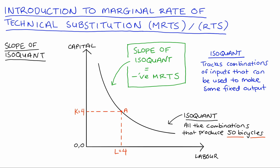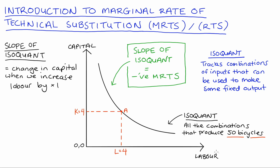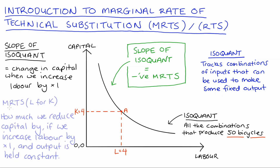Going back to our isoquant, we interpret its slope similarly: it tells us how much capital (vertical axis) changes when we increase labour (horizontal axis) by one, while staying on the same isoquant — meaning output is held constant. Remembering our definition of MRTS — how much we reduce capital if we increase labour by one unit with output held constant — the slope and our MRTS are basically telling us the same thing.